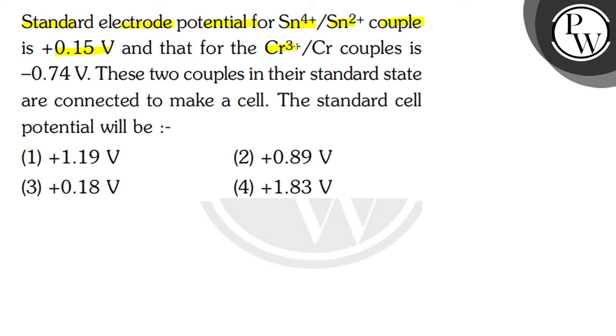for the Cr³⁺/Cr couple is -0.74 V. These two couples in their standard state are connected to make a cell. The standard cell potential will be.